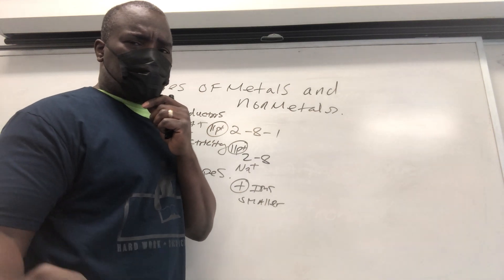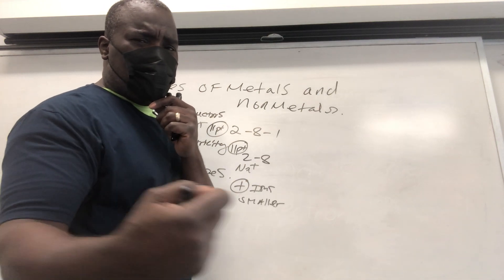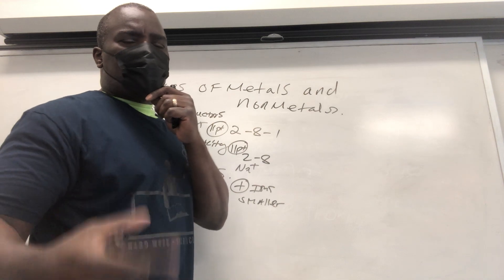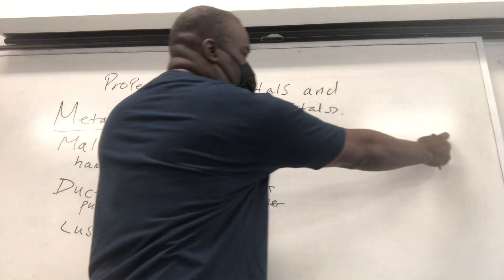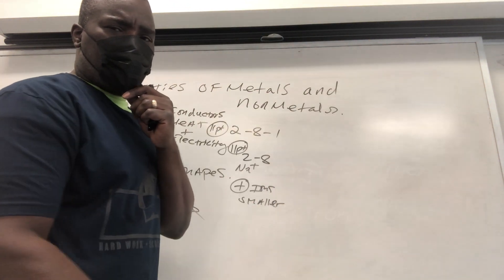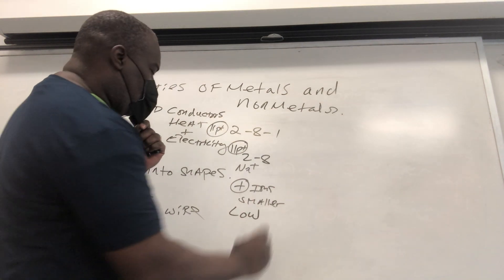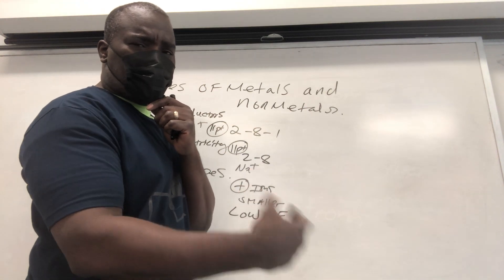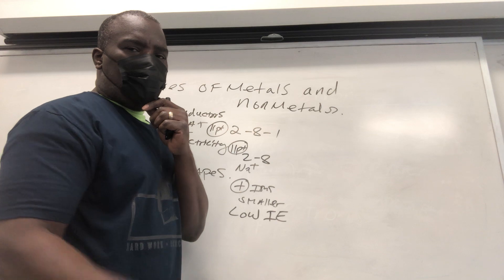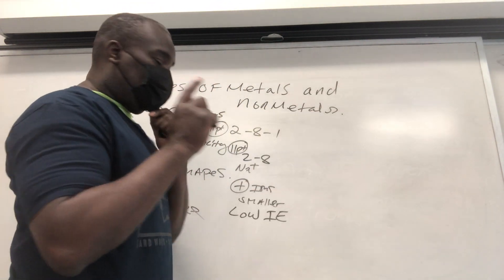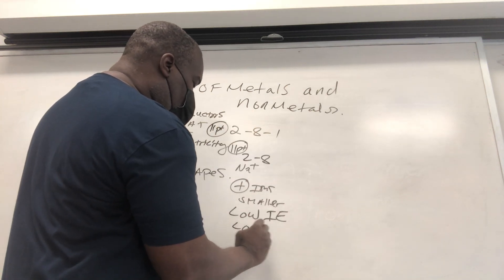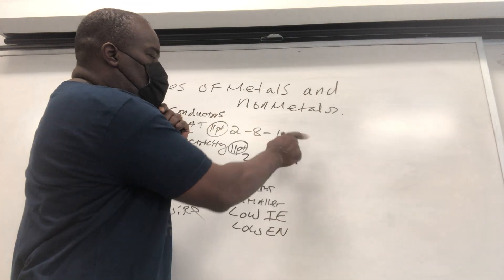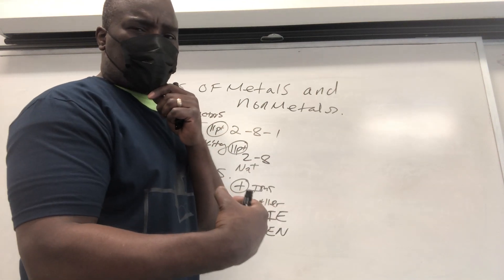In terms of ionization energy for metals — the energy needed to remove an electron from the valence shell — it does not take that much energy to pull off a valence electron compared to a non-metal further along the same period. So metals tend to have low ionization energy. In terms of electronegativity, the attraction of metals for electrons in a chemical bond is low compared to non-metals. So metals also tend to have low electronegativity. Metals want to lose their outer electron, so the attraction to bring electrons towards themselves is very low.